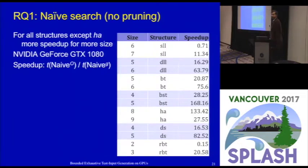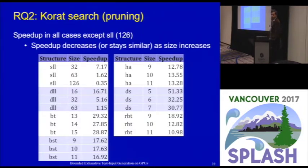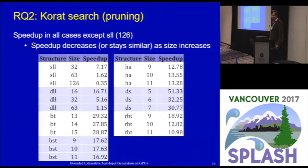With pruning enabled, the GPUs provide quite a bit of speedup. In all cases except single linked lists, where the number of explored candidates is small, we observe meaningful speedups. We also observe that as size increases, speedup sometimes decreases or stays essentially the same.